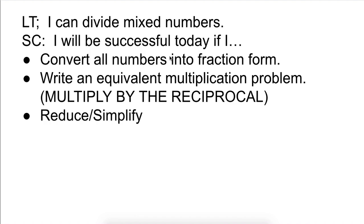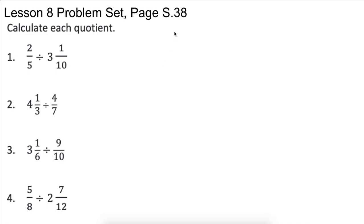First thing, in order to be able to divide mixed numbers, you need to convert all numbers into fraction form. Then you can write an equivalent multiplication problem, which is multiplying by the reciprocal. And then you need to reduce and simplify back into the form that you need. So let's go ahead and just start working with these. This is on page 38.